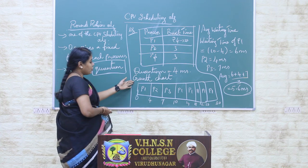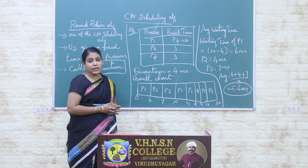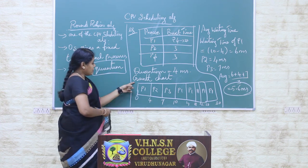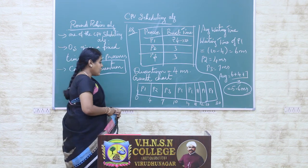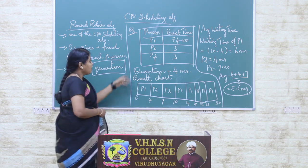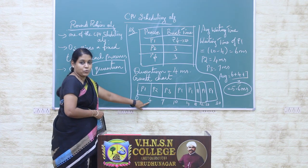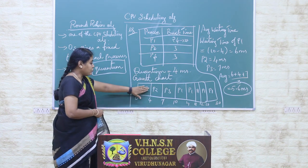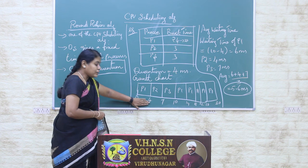Now we will look at the Gantt chart. Through the Gantt chart, we can find the average waiting time, and based on the average waiting time we can determine which algorithm performs best for CPU scheduling. The Gantt chart starts from 0 milliseconds. At 0 milliseconds, the first process P1 enters the CPU to execute. P1 occupies the CPU for 4 milliseconds, because the given quantum period is 4 milliseconds. So only for 4 milliseconds does P1 process its execution on the CPU.